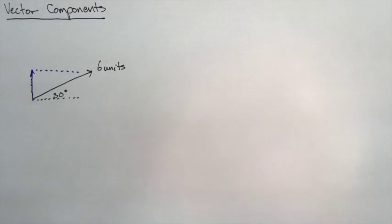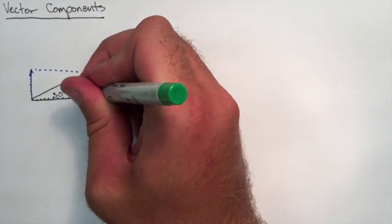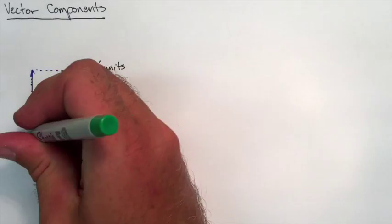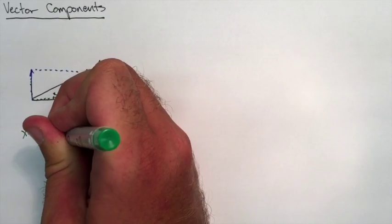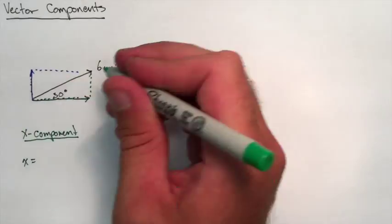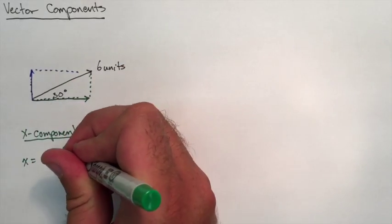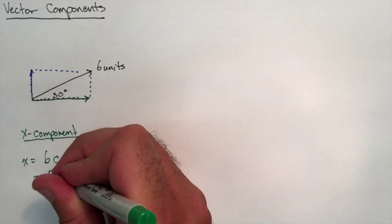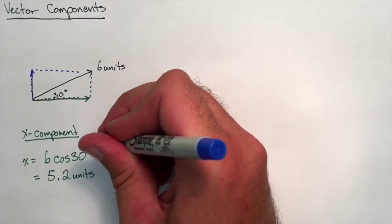So we'll use Y in blue. And the X component will be in green. So here, if we look for this X component, X is the adjacent side to that angle. So we can use cos. So X is going to be 6 cos 30, which ends up being 5.2 units.